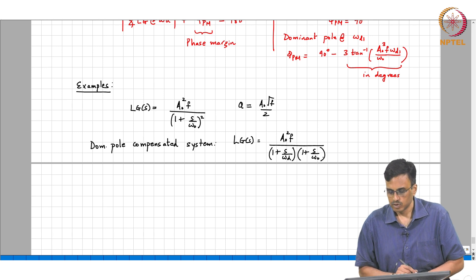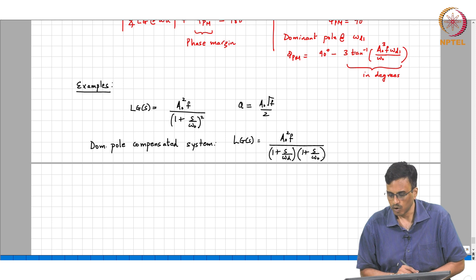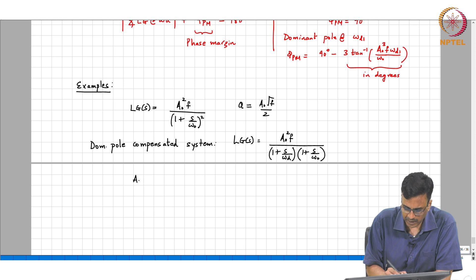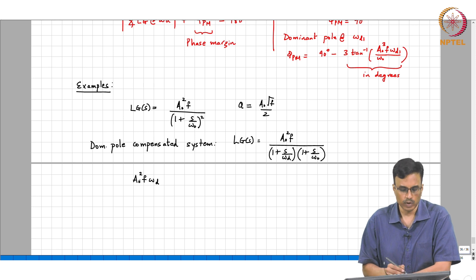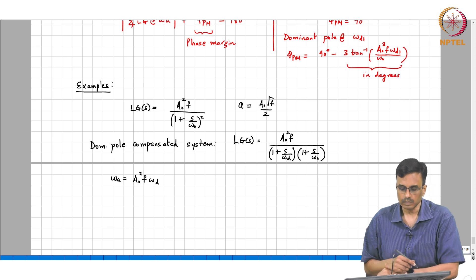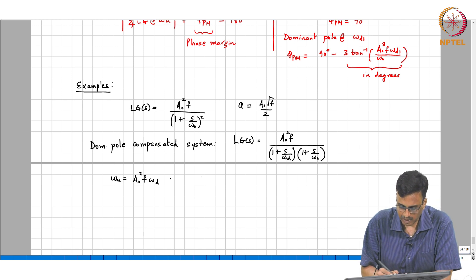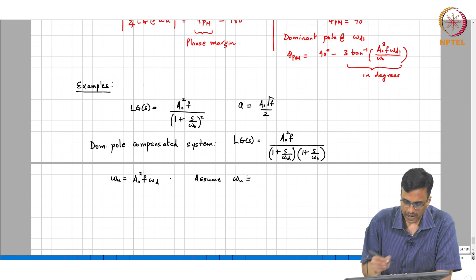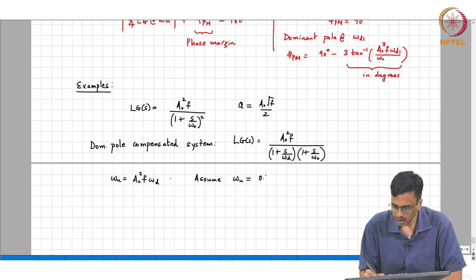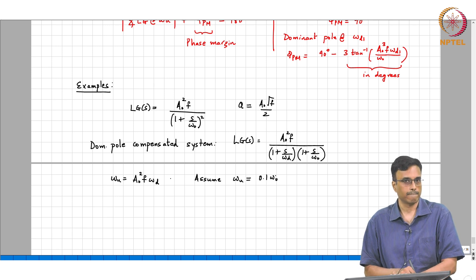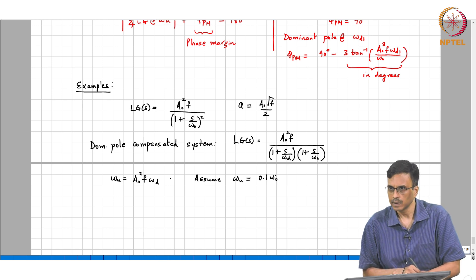How low should we choose omega_d? Let us say we choose — what is the unity gain frequency? If omega_d is much smaller than omega_naught, then a_naught² * f * omega_d is the unity gain frequency. Let us assume that omega_d is chosen such that the unity gain frequency is 0.1 * omega_naught.